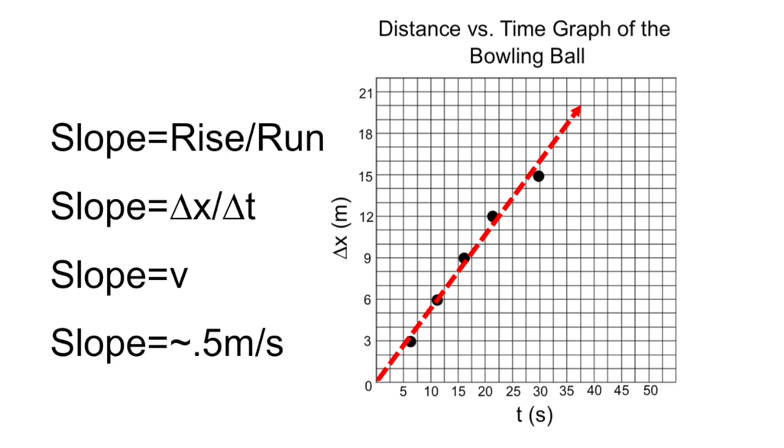The slope can be calculated by dividing the change in distance over the change in time. The slope is also the value of velocity. The slope was calculated to be about 0.5 meters per second.